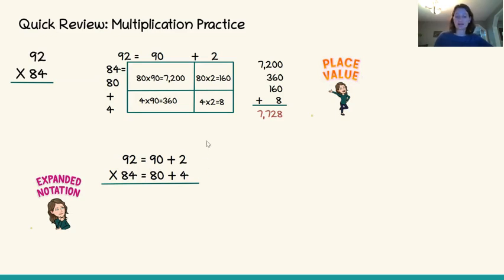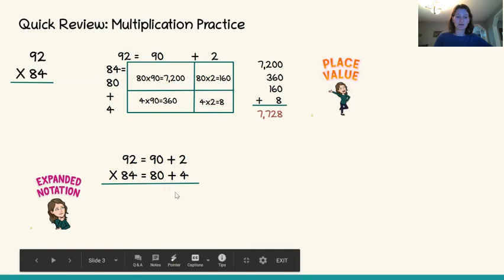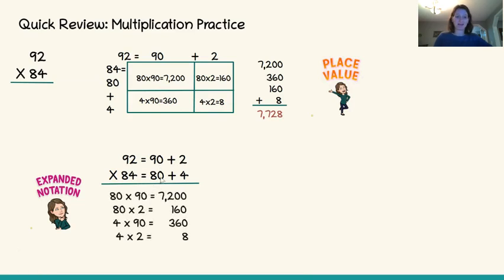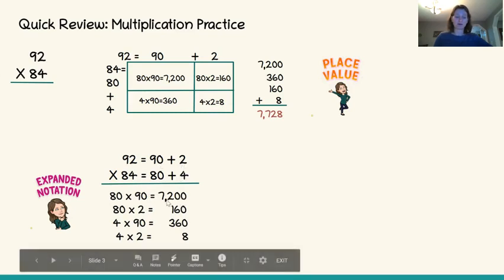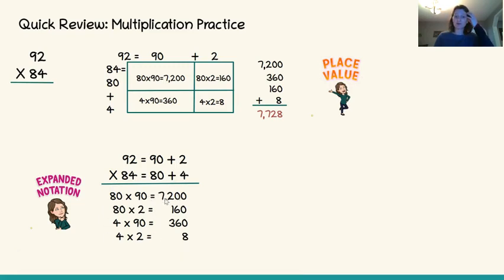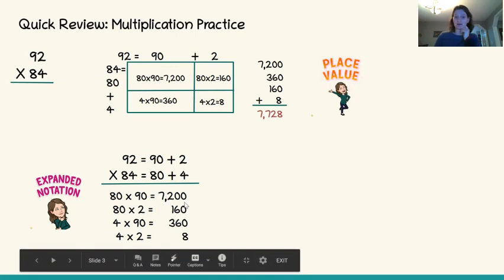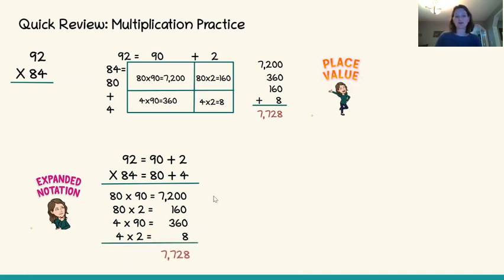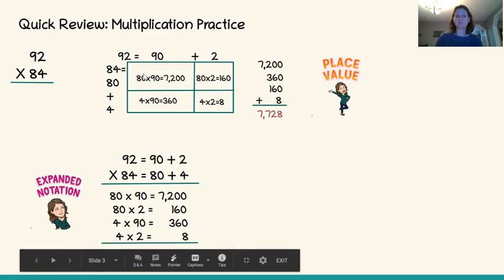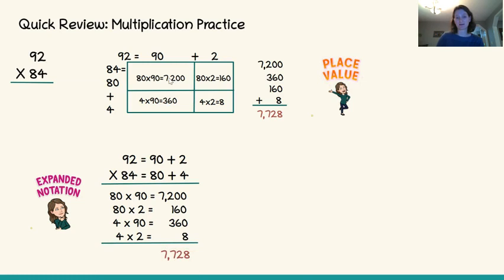Just like the place value sections method, we use those same four equations and list them underneath the line: 80 times 90, 80 times 2, 4 times 90, and 4 times 2, and we write our partial products. If you are very familiar with expanded notation you may just be recording the partial products: 7,200; 160; 360; and 8. Either way is totally fine — you add them together and solve, noting these four equations are the same as in the place value sections method.